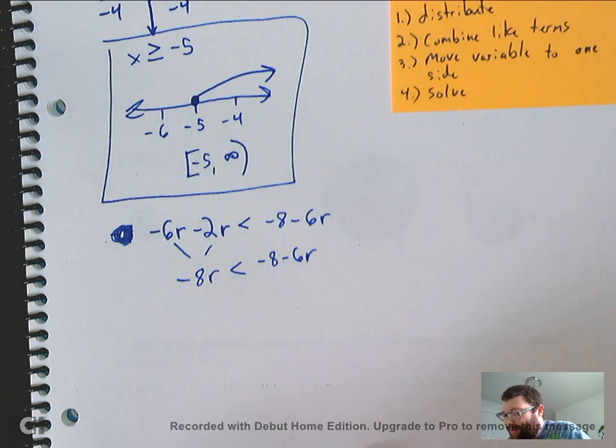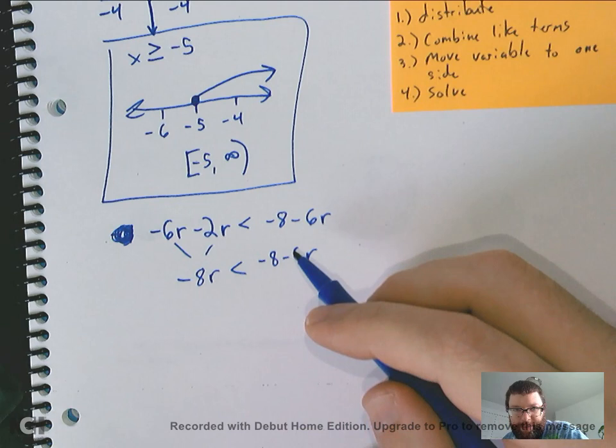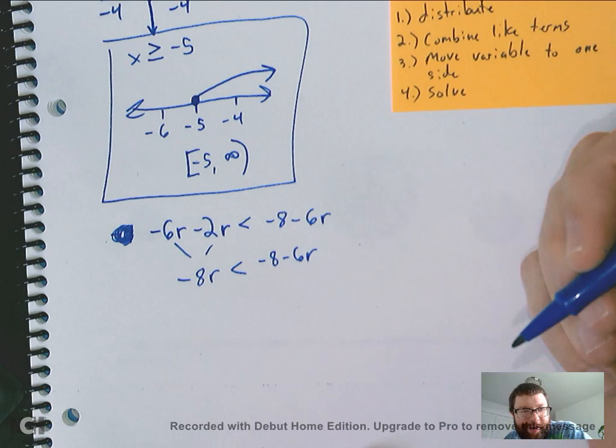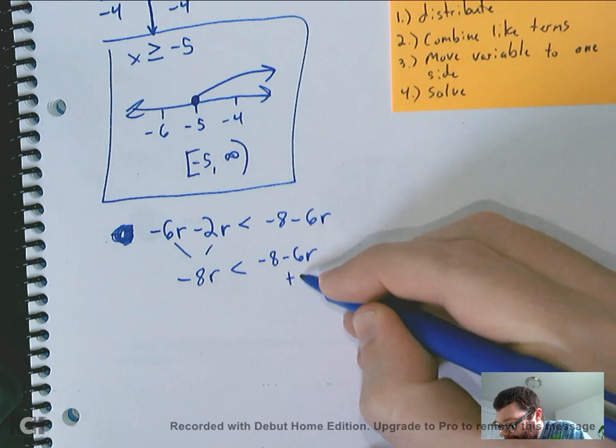If I'm trying to move the variable to one side, the easiest way to get the variable isolated without adding another step would be to move this variable, since this variable is already by itself. So, I usually move the smaller number anyway, but it's really up to you. So if I add 6r.